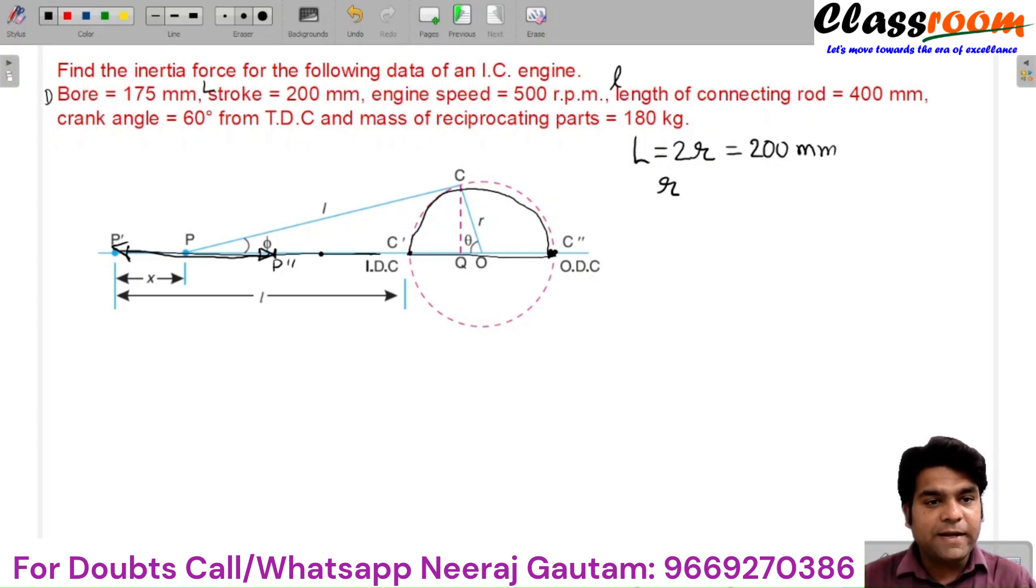So the crank radius becomes 100 mm, or in meters, 0.1 meters. The diameter of bore is given, but it is not used in this problem, because in the relations of acceleration of piston as well as the inertial force of the piston for the reciprocating components, this diameter is not there. So this is the extra data given in the problem.